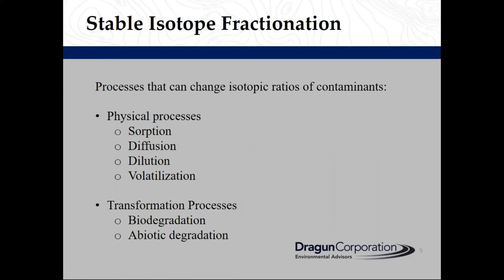Isotopic ratios of the contaminant can be affected by several processes in the subsurface. These processes can be physical, such as sorption, diffusion, dilution, and volatilization, and biological and chemical processes such as biodegradation or abiotic degradation. The general acceptance is that physical processes do not change isotopic ratios significantly, but degradation processes do.